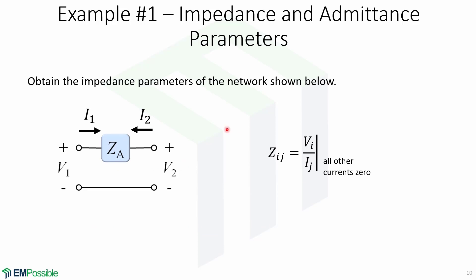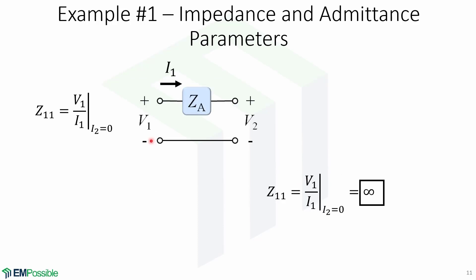Now we will find the impedance parameters of the same network. Recall that the element Zij equals Vi over Ij when all other currents are 0. We will find Z11, which is V1 over I1 when I2 equals 0. This means that this port is going to be open, leading to no current. Since we have an open circuit, I1 equals 0, so Z11 equals infinity.